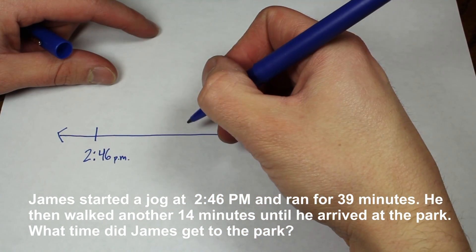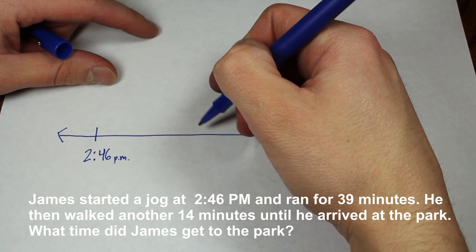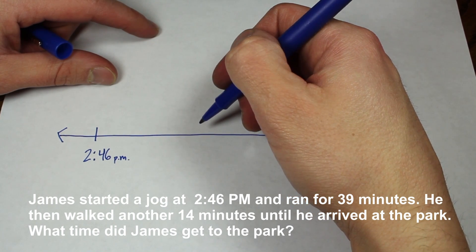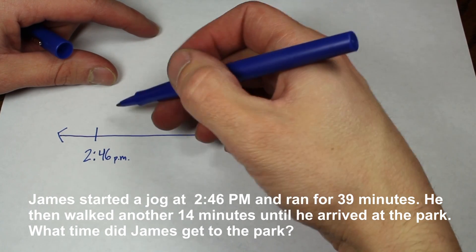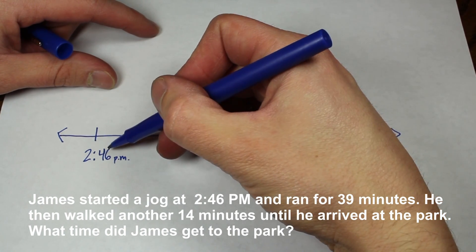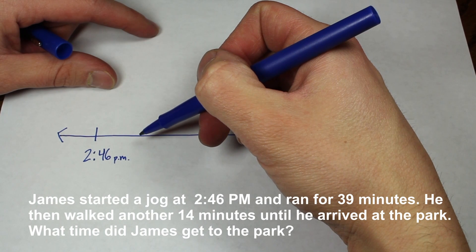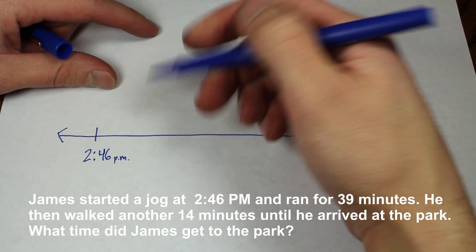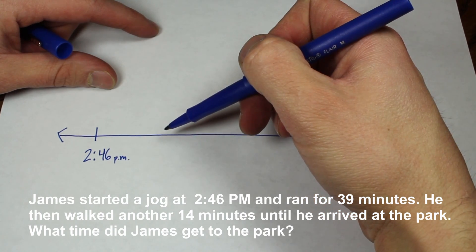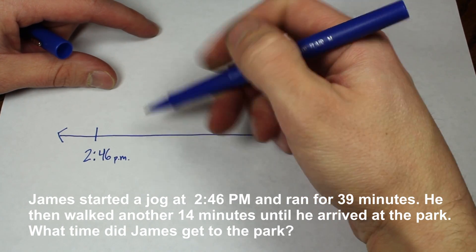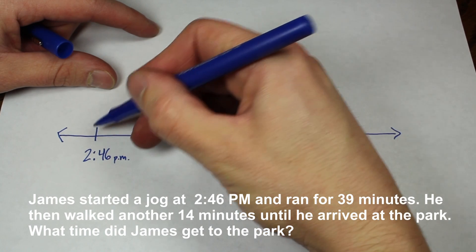It says he ran for 39 minutes, so we know we need to add 39 minutes to our number line. But what we want to do is break that number up so that it's easier to work with. So for instance, if it's 2:46, how many minutes would we need to add to get it to a nice round hour? So the next hour coming up would be 3 o'clock. So in order to get from 46 to 3 o'clock, we know we would need to add 14 minutes.